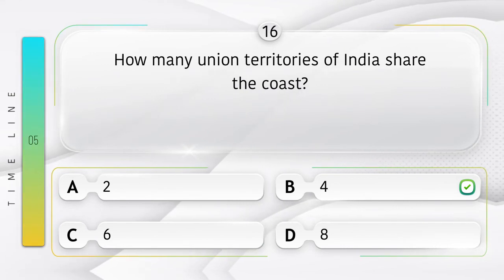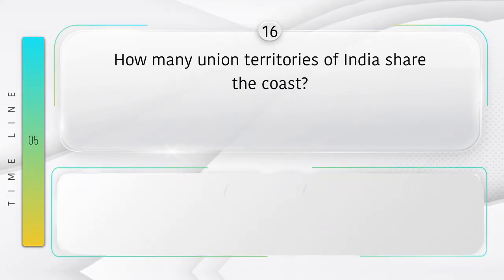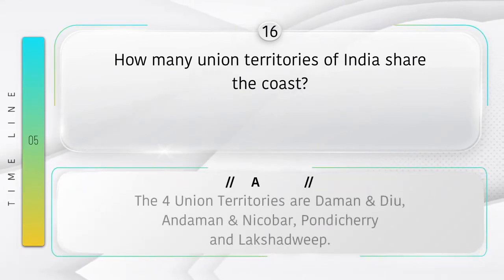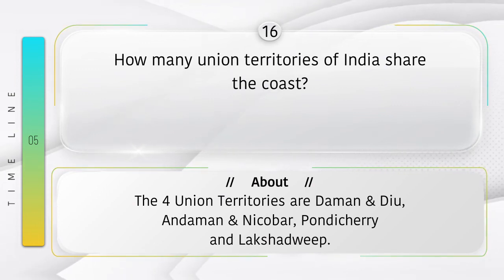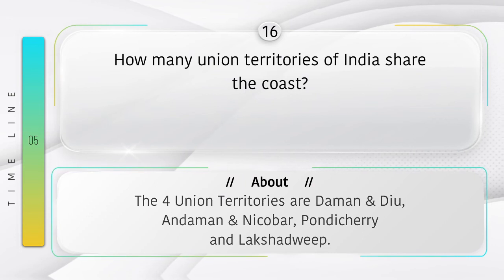How many union territories of India share the coast? Option A: 2, B: 4, C: 6, D: 8. Answer is option B: 4. Did you know the four union territories are Daman and Diu, Andaman and Nicobar, Pondicherry, and Lakshadweep?